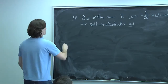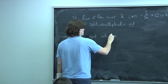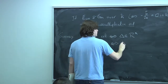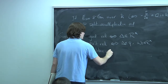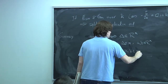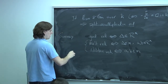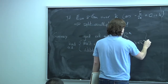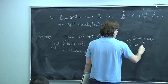To summarize: good reduction is equivalent to Δ being a unit; additive reduction is equivalent to both a and b being non-units (in the maximal ideal); multiplicative reduction is when neither a nor b is in the maximal ideal but the discriminant is zero. If you're multiplicative or additive, it's called bad reduction. Good or multiplicative is called semi-stable, and that's equivalent to one of a or b being a unit.